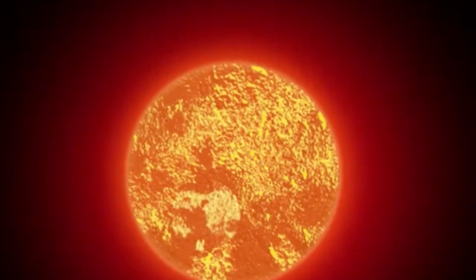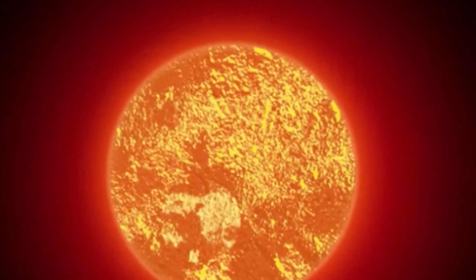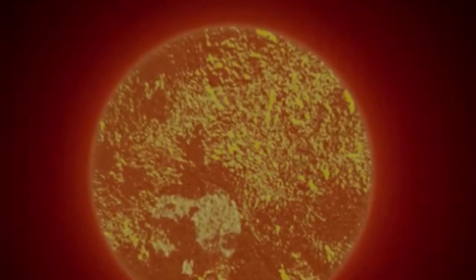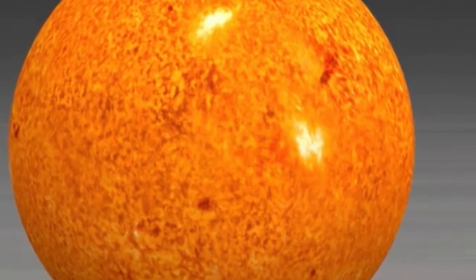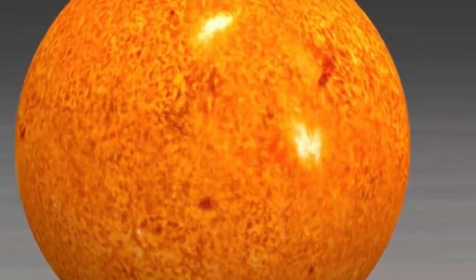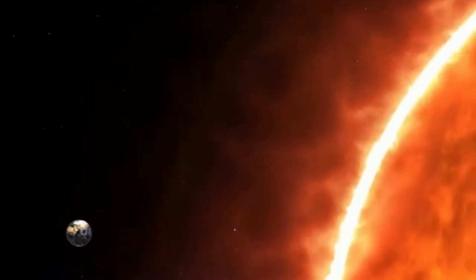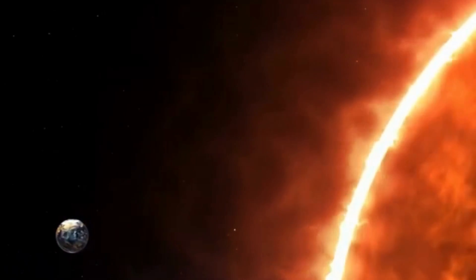8. The Sun is so massive that it accounts for 99.86% of the total mass of the entire solar system. Its mass is approximately 330,000 times greater than that of Earth.